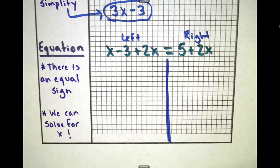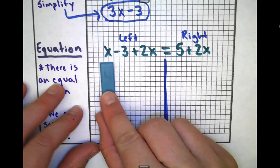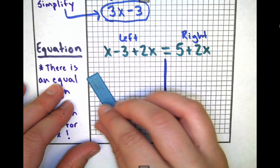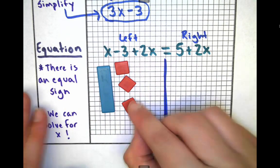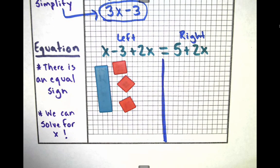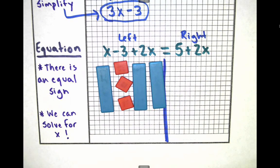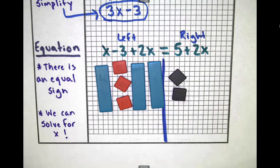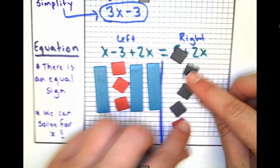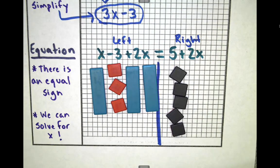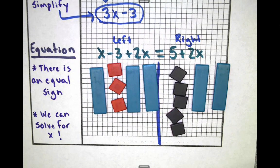I can grab my algebra tiles and build this expression. Watch. So here's an x. It won't be red because it's positive. It's going to be blue. Minus 3 means I have three units that are red because they're negatives. There's my minus 3 plus two more x's. Then 5 plus 2x. Five positive units: 1, 2, 3, 4, 5, plus two more x's. Okay, there's a picture of our problem.